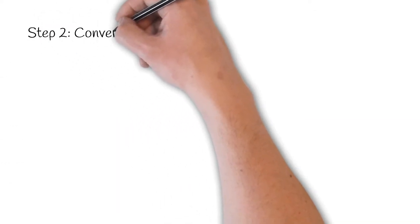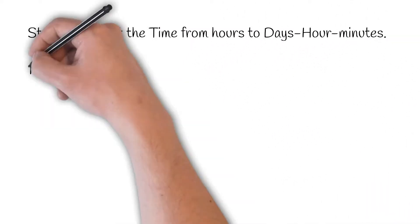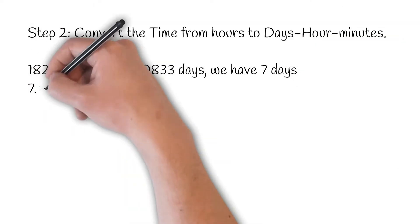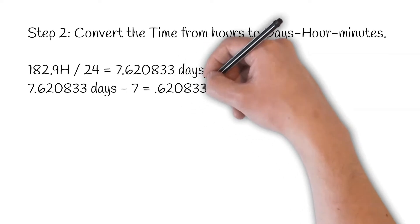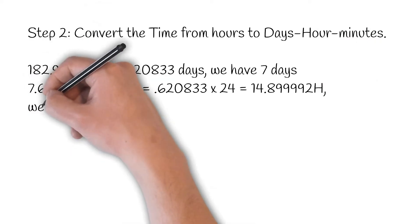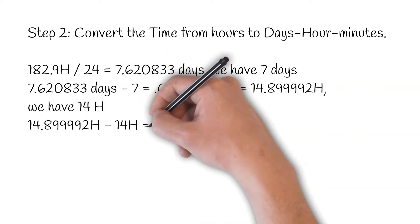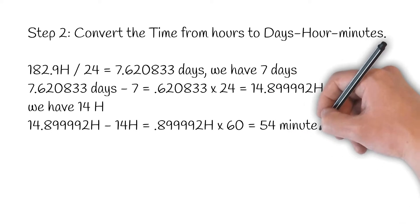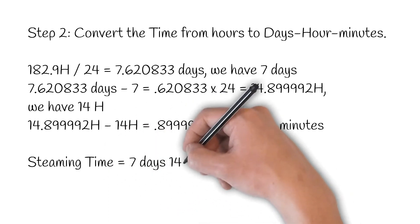Step 2: Convert the time from hours to days, hours, and minutes. 182.9 hours divided by 24 equals 7.620833 days. We have 7 days. 7.620833 minus 7 days equals 0.620833 days; multiplied by 24 equals 14.899992 hours — we have 14 hours. 14.899992 minus 14 hours equals 0.899992 hours; multiplied by 60 equals 54 minutes. Steaming time will be 7 days, 14 hours, and 54 minutes.